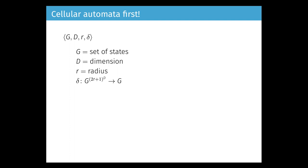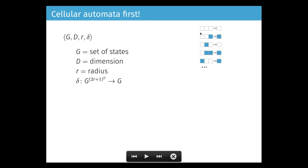Each finite automaton takes a state from g, and the local update rule is used to update the state of these automata. The local update rule is seen as a lookup table in which you represent the state of the current considered finite automaton and the state of its neighbors. Here, for example, I chose d equal to 1 and r equal to 1, so all our automata are arranged on the regular grid z.